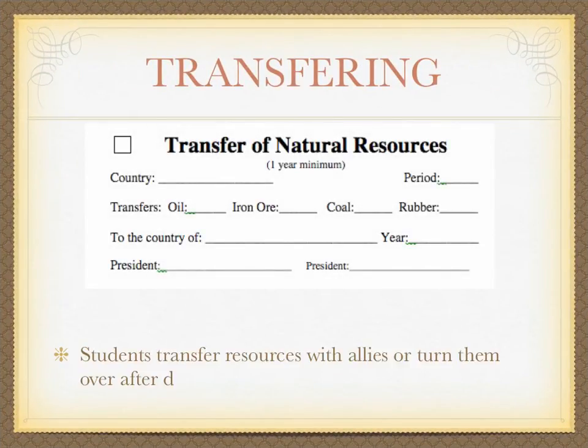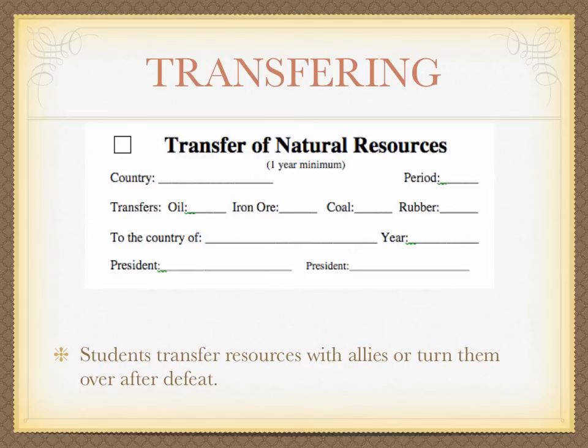Students can transfer resources to their allies with the transfer of resources slip. The slip gives you a written record of the transfer and allows you to keep track and back up your spreadsheet in case you get lost. We also use these slips to transfer resources when countries are taken over. The box in the upper left is used to mark sheets that have been entered into the spreadsheet, saving time and frustration in case you are interrupted when updating the natural resources spreadsheet.